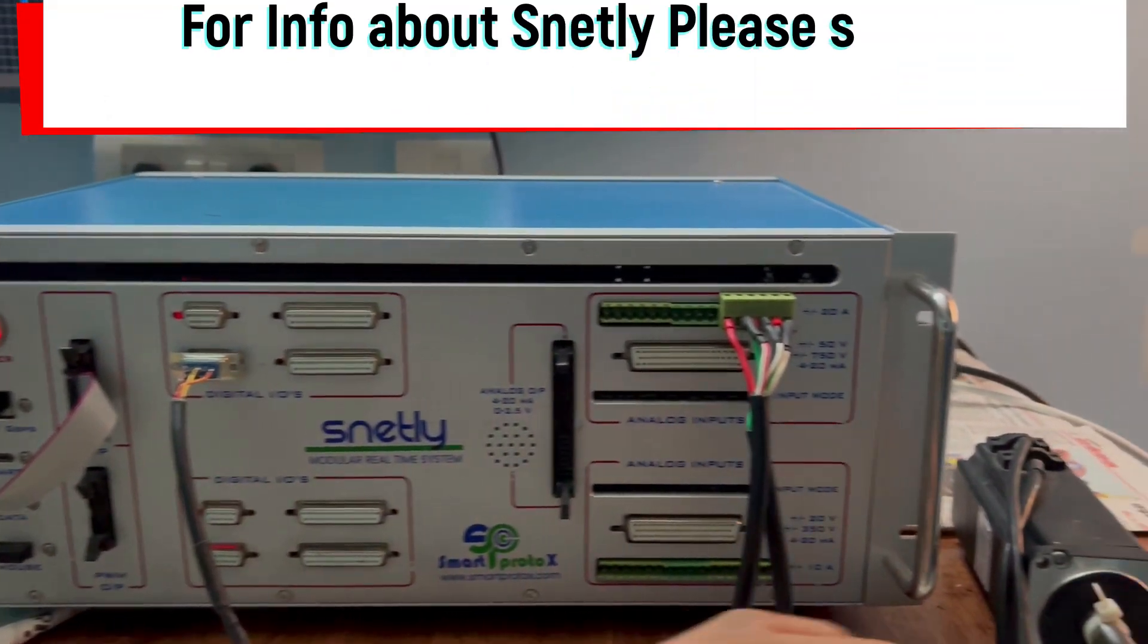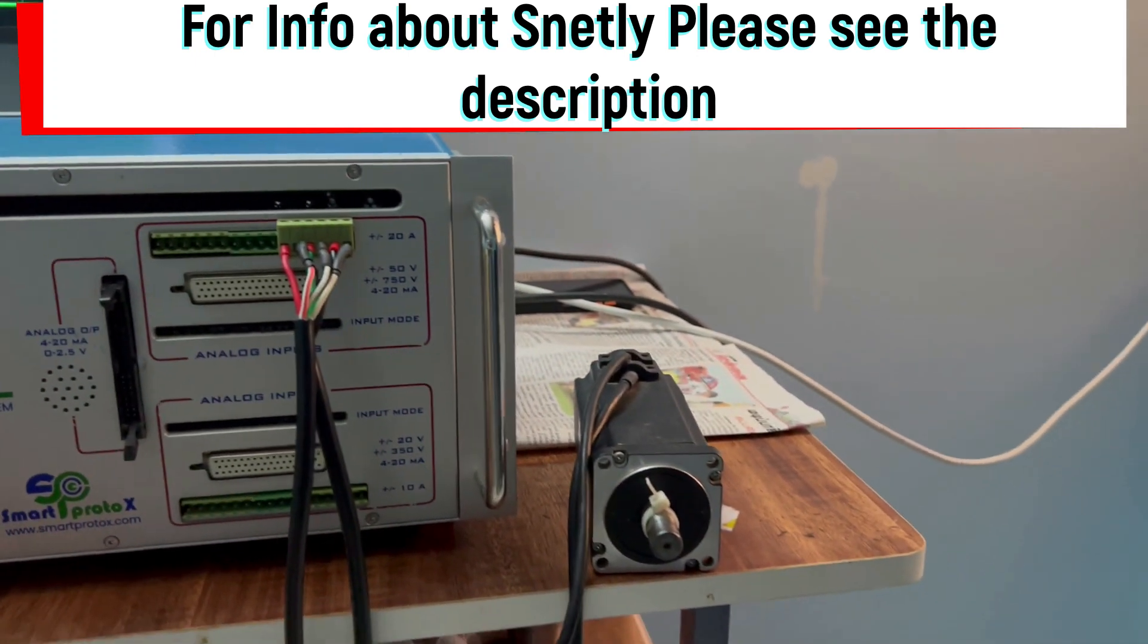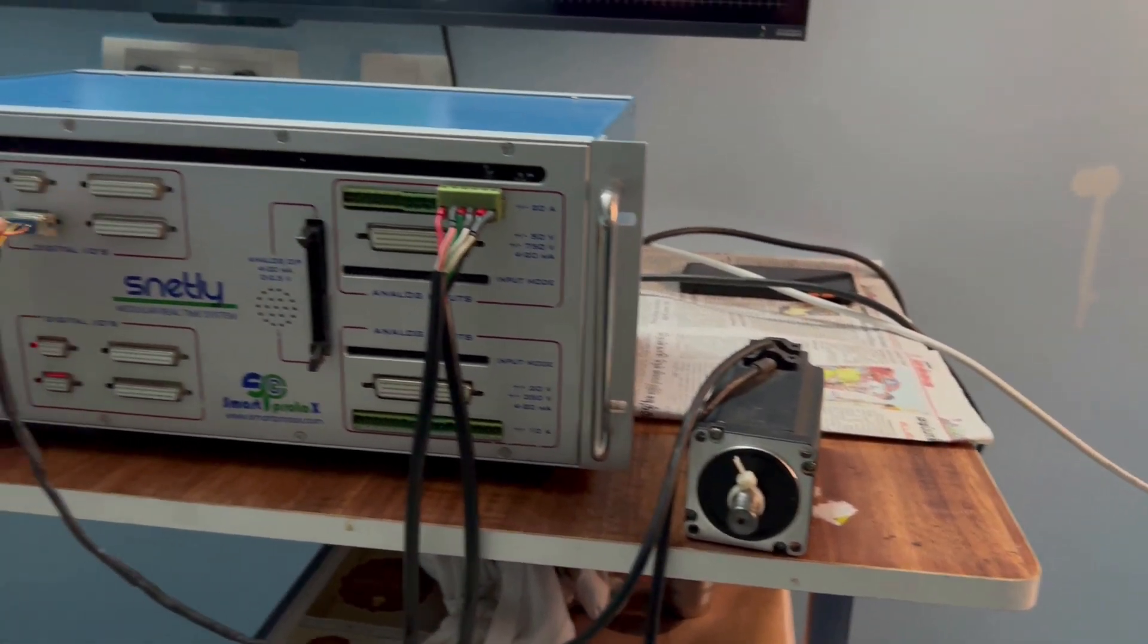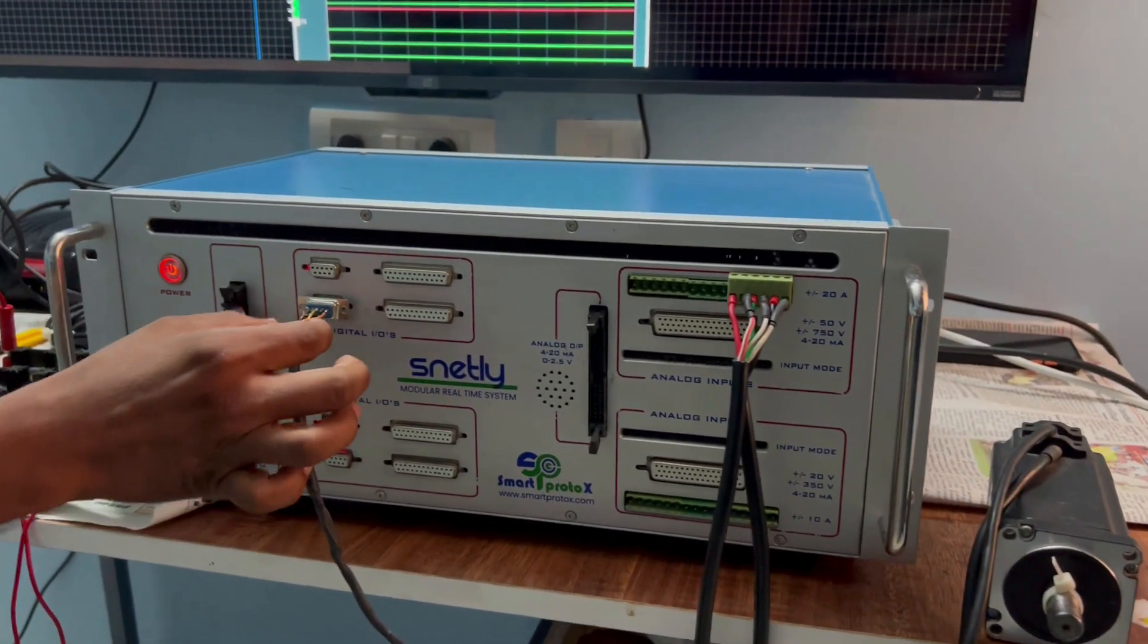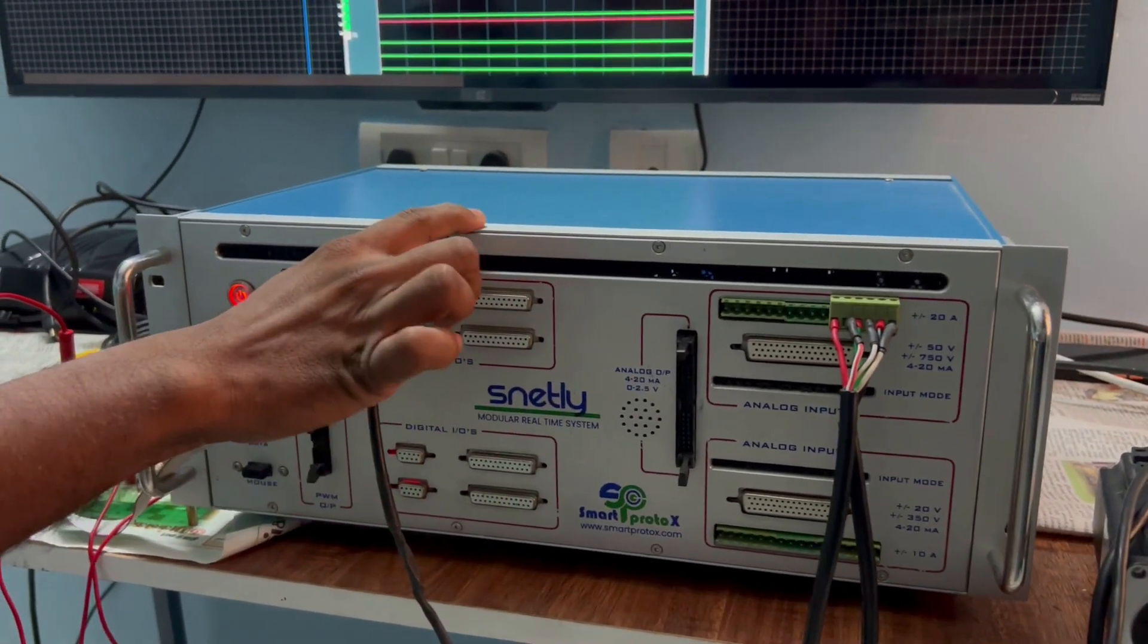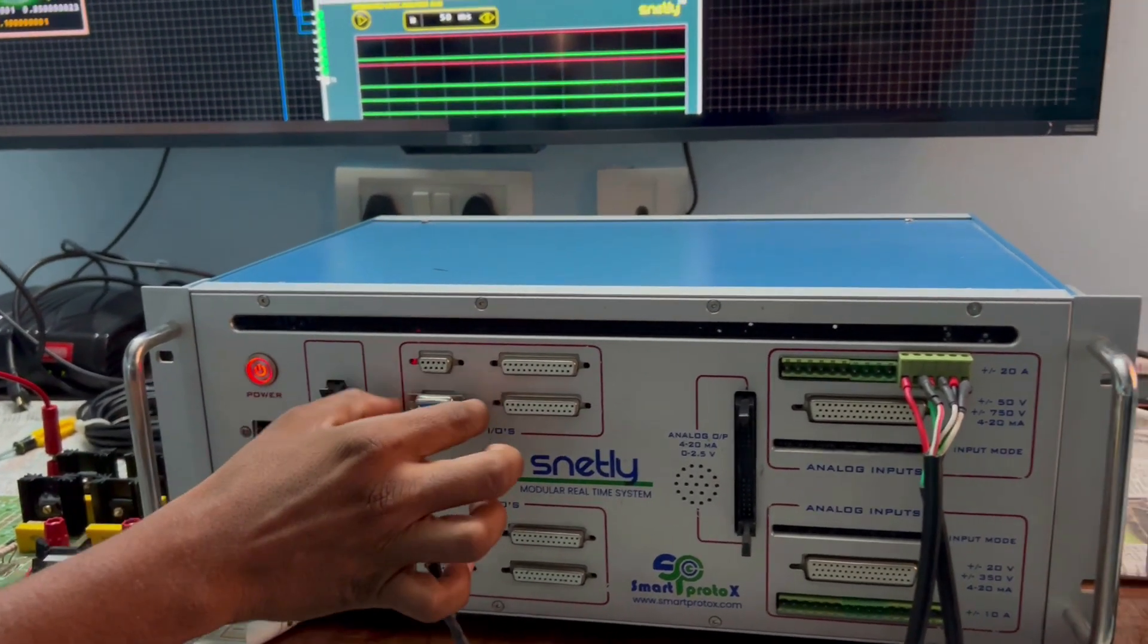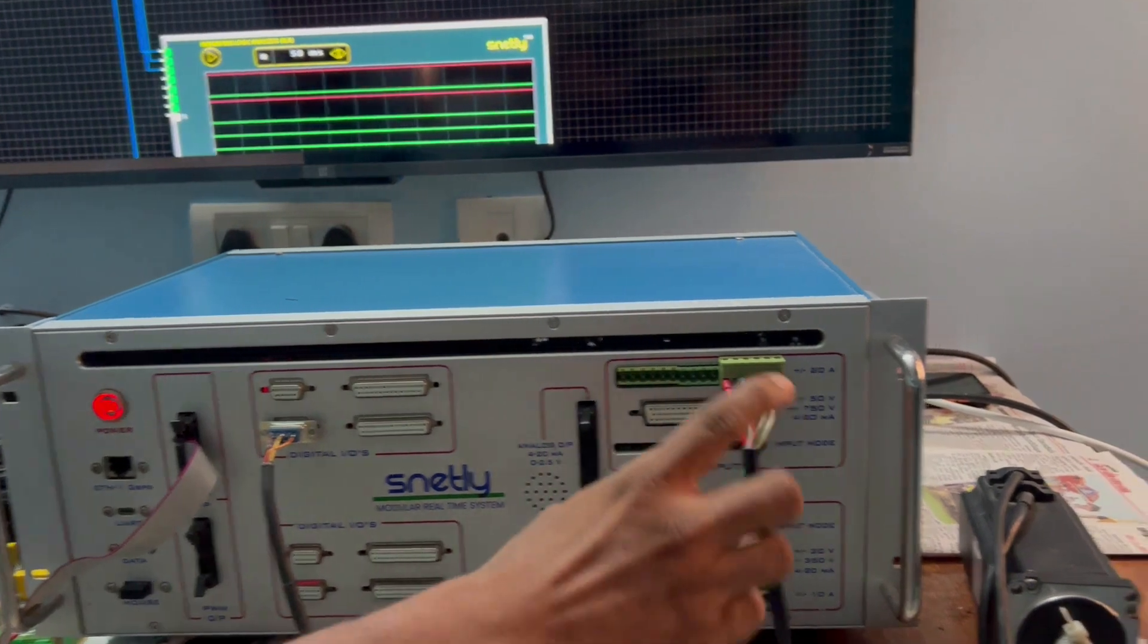Here we are connecting a 3-phase brushless DC motor and the feedback from the motor hall signals. Three signals will be connected to the digital input pin, and the power supply has been taken from the Snetly. Hall A, Hall B, and Hall C with a phase shift of 120 degrees in the motor configuration.